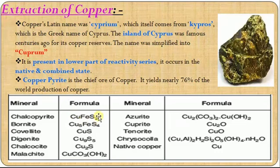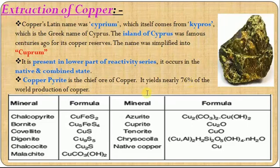The other important ores are chalcocite (Cu2S), cuprite or ruby copper (Cu2O), etc. Copper pyrite mainly provides 76% of the demand for copper. So it is the chief ore of copper.